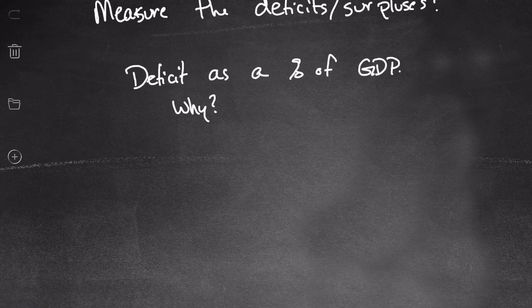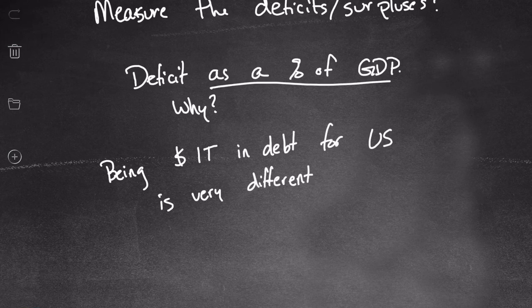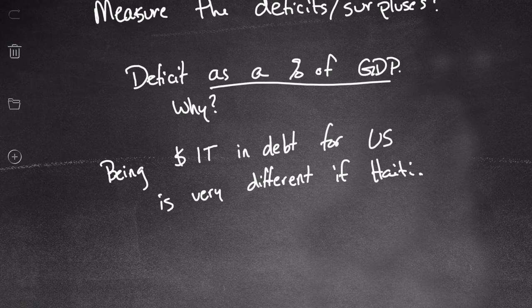We record debts as a percent of GDP because being one trillion dollars in debt is very different for the US than for Haiti. We want a measure that records debts — and surpluses — for economies of different sizes, so we can get a sense of how big the debt really is compared to how much income or production is actually happening. The last I saw, the US debt-to-GDP ratio was about 104 percent.